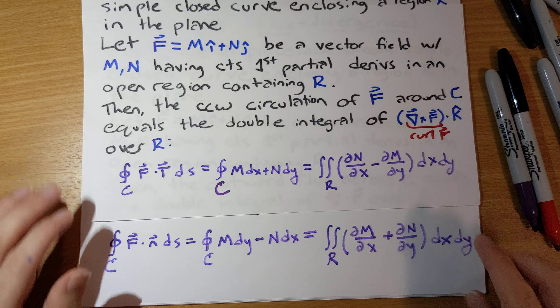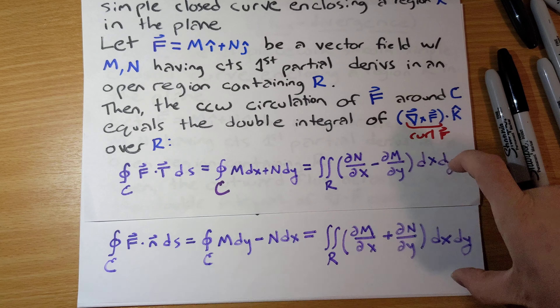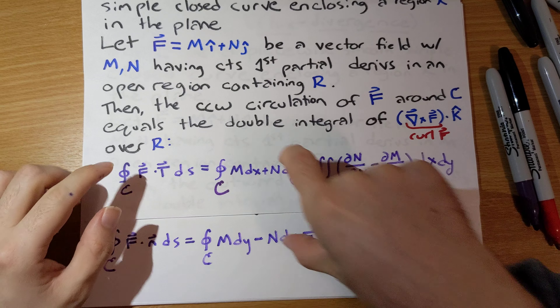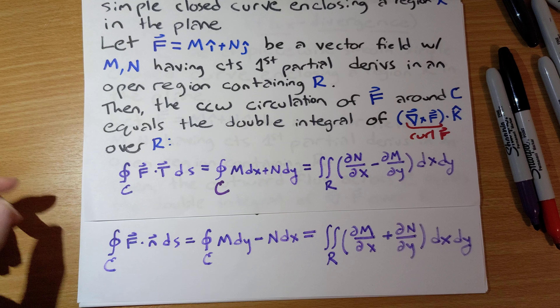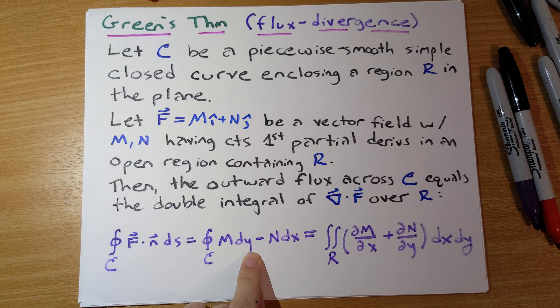This and this are very similar. Everything up here is exactly the same between the two versions. Comparing the bottom lines: on the right, both are a double integral over some region of something with partial derivatives. In the circulation-curl version it's the difference of two partial derivatives, and in the flux-divergence version it's the sum of two partial derivatives. On the left, it's a line integral around the boundary.